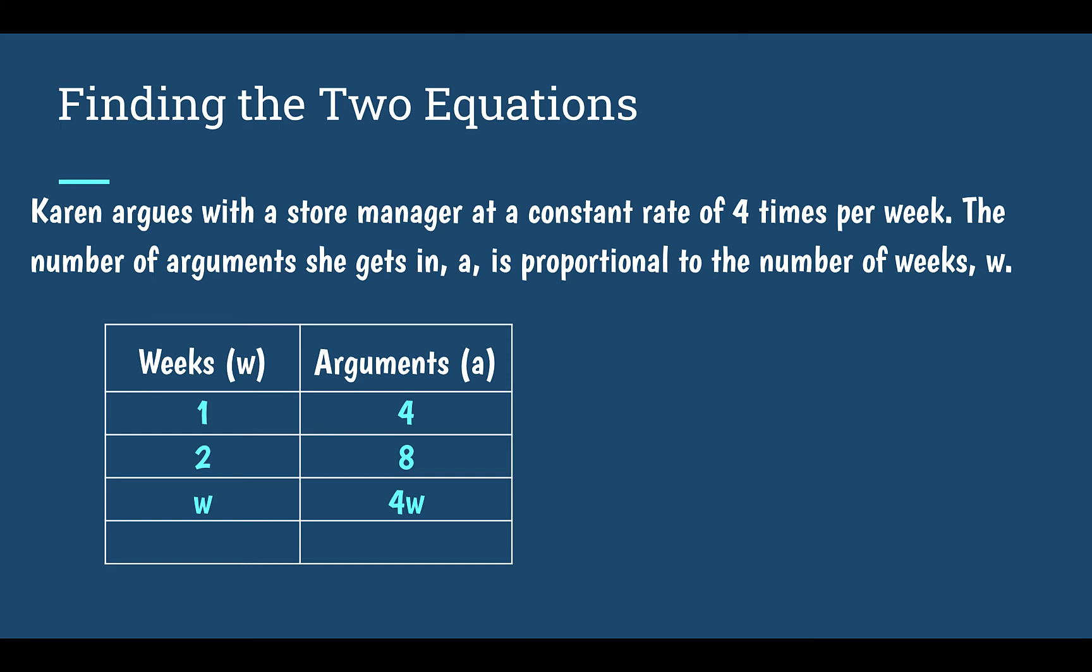Now, to put our equation together, we're going to look at our output, our end, which is our arguments, and what did we have to do with our input to get there? My output, A, in order to figure out A, I had to take W and multiply it by four. I can see this in the table because in my last row, if I had W weeks, my arguments is equal to four W. If I want to write an equation, then I would just say that A, our arguments, is equal to four W, four times the number of weeks. There's one of our equations.